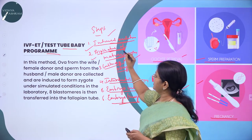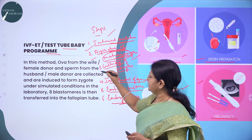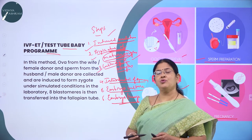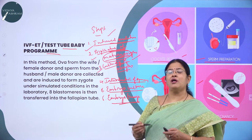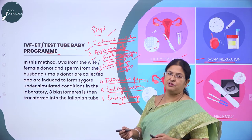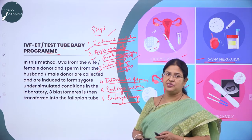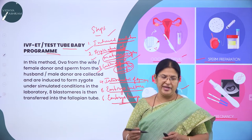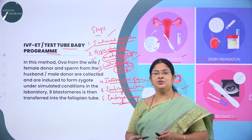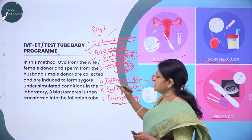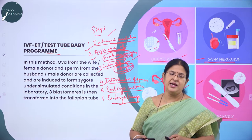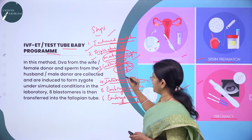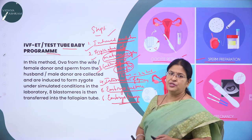The aspirated oocytes are then cultured in a sterile medium almost similar to the fluids found in the fallopian tube, so all conditions are favorable like natural conditions. Next, sperms from the partner are extracted and introduced into the culture medium, where the eggs and sperms are allowed to fertilize. This takes around 12 to 24 hours.